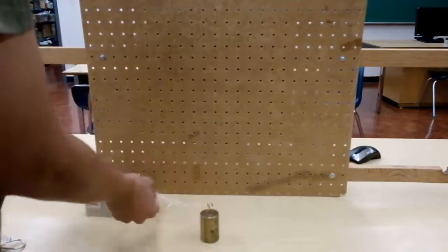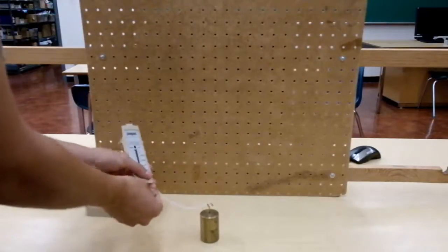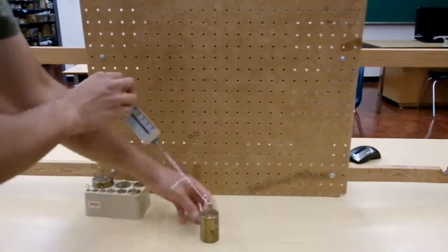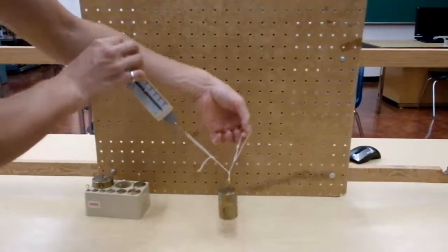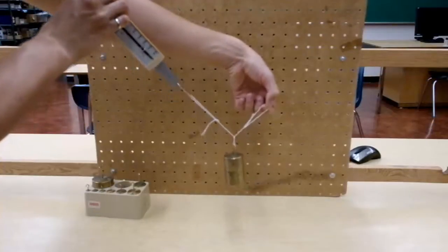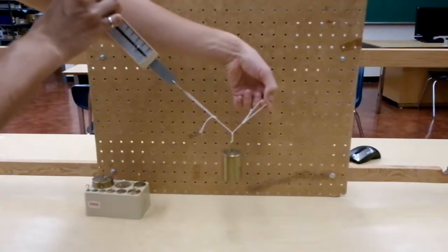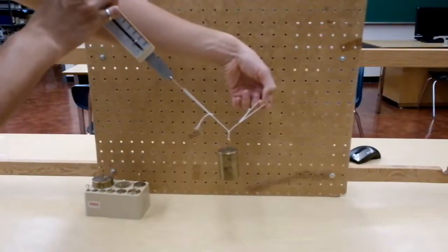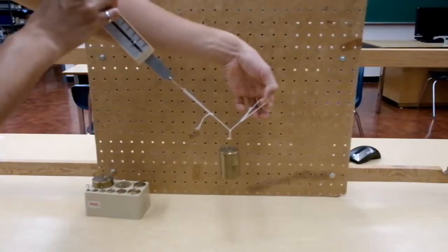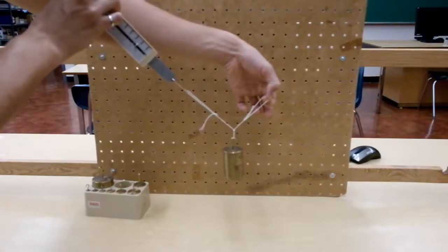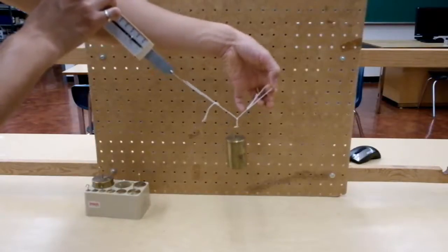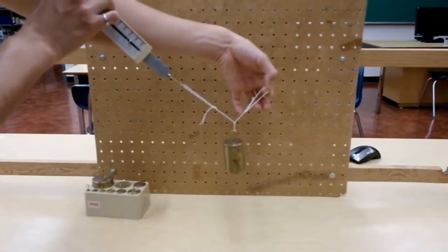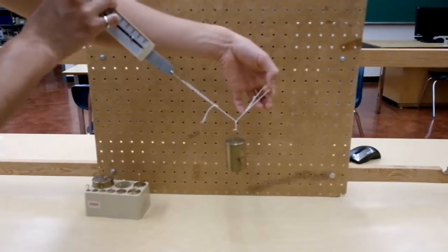When you're ready, you can replace one of these with the spring scale. And you can pull on it until you get that same symmetrical force shape. Notice that the length doesn't matter, but the angle is what's going to matter here. Work out, measure the angle and then switch and measure both the other forces as well.